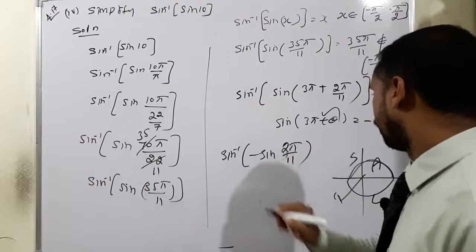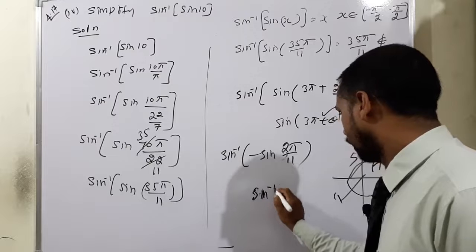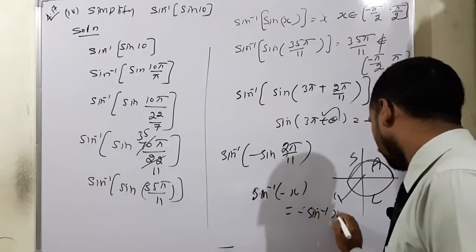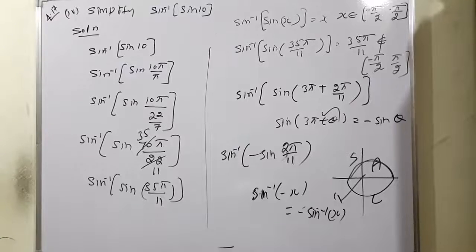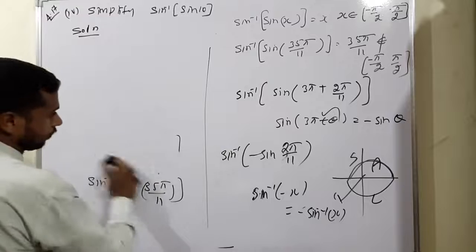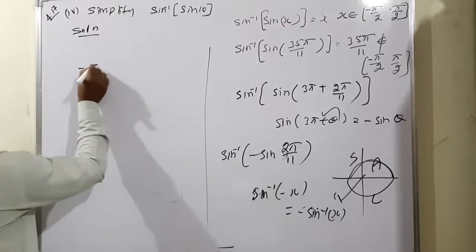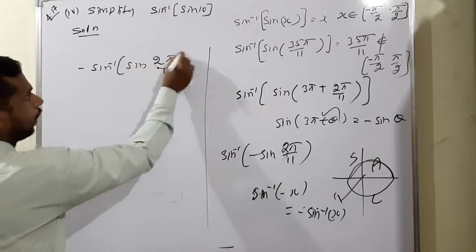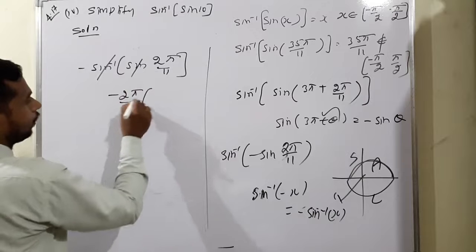Therefore sin inverse of sin(3π + 2π/11) = sin inverse of −sin(2π/11). We know that sin inverse of −x equals −sin inverse of x. So sin inverse of −sin(2π/11) = −sin inverse of sin(2π/11). Sin and sin inverse cancel, giving the answer: −2π/11.